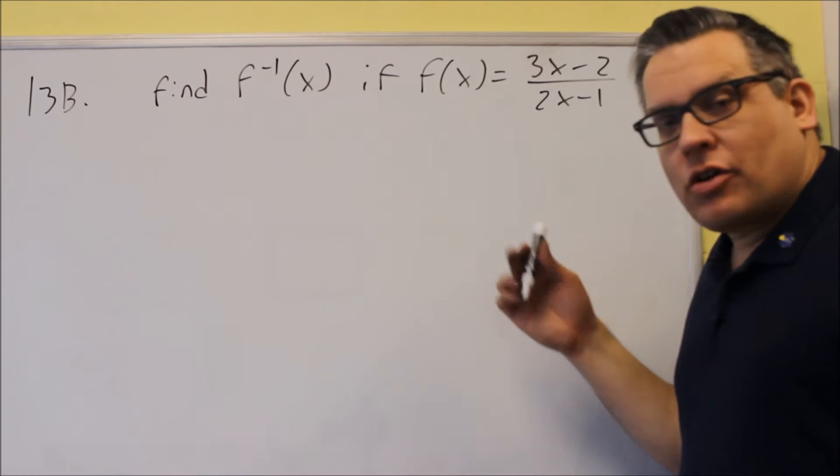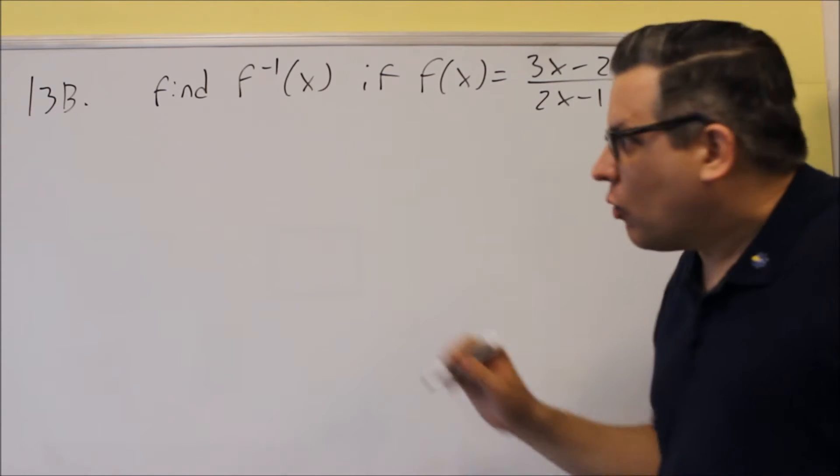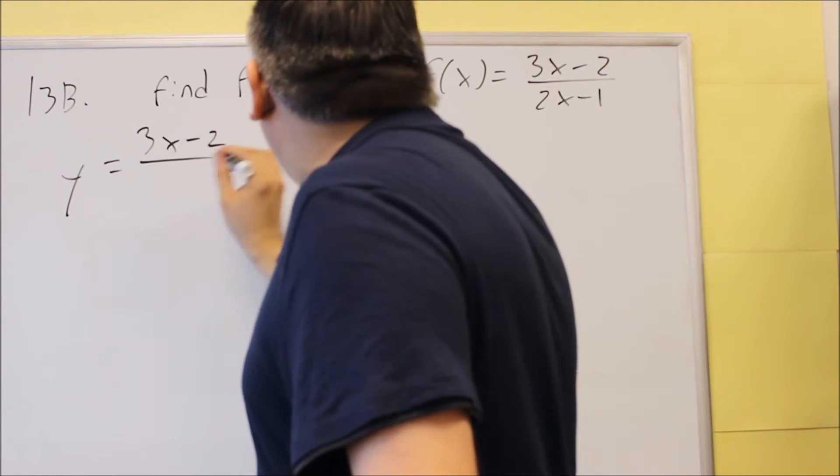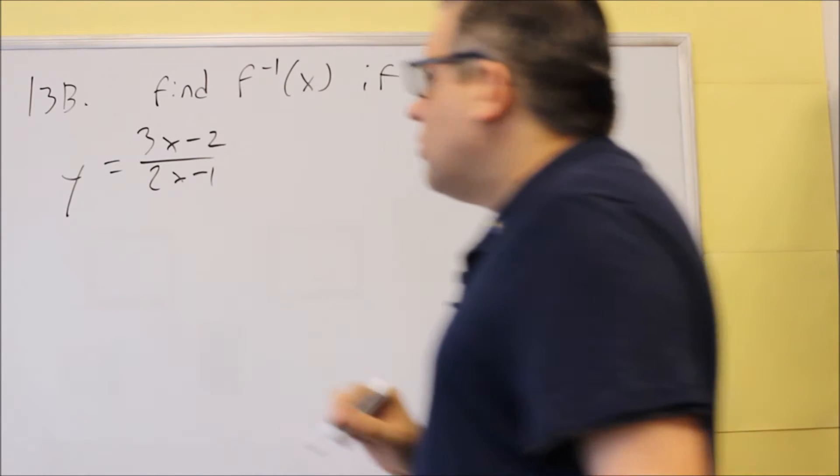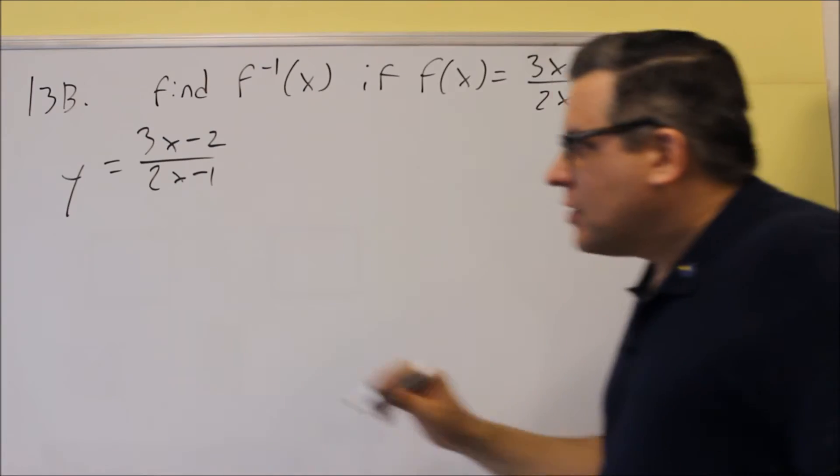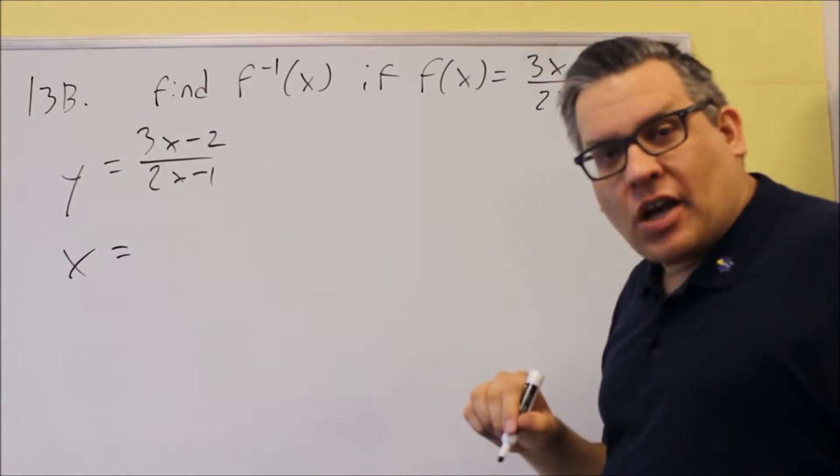So if we do this one again, we're going to follow the same four steps for finding the inverse. The first thing would be to replace the f of x with a y. So I have y equals 3x minus 2 over 2x minus 1. Next thing you want to do is switch the x and the y. So everywhere I see a y, I'm going to put an x. Everywhere there was an x, I'm going to put a y.